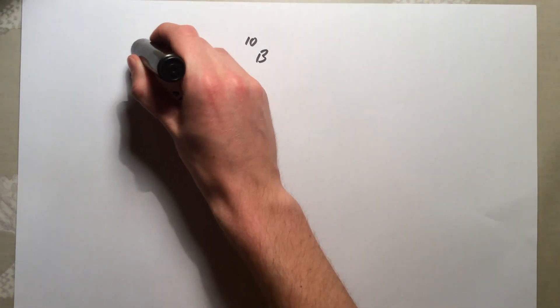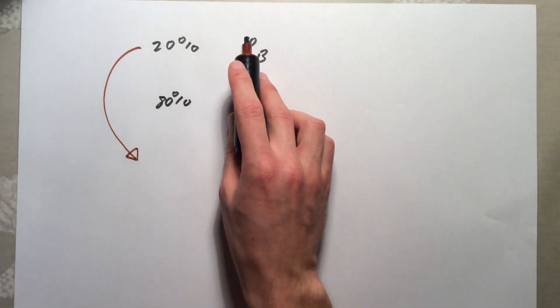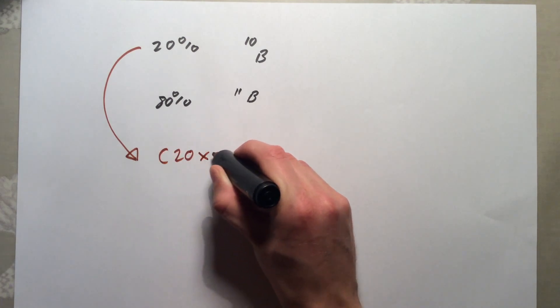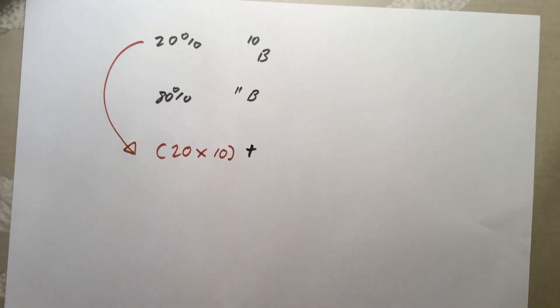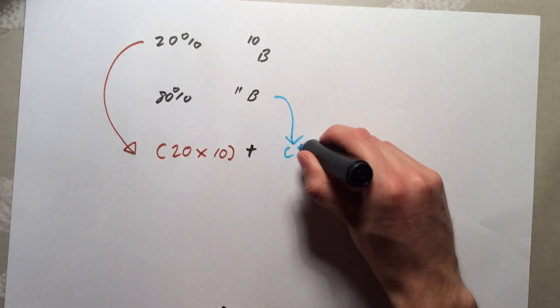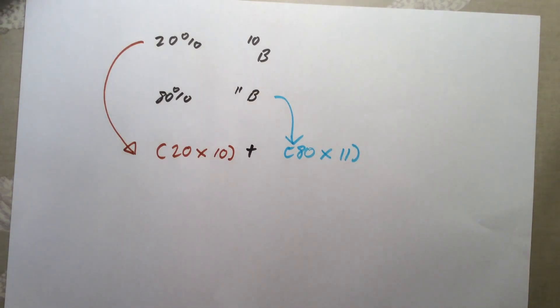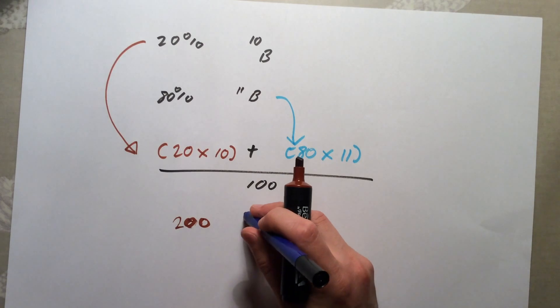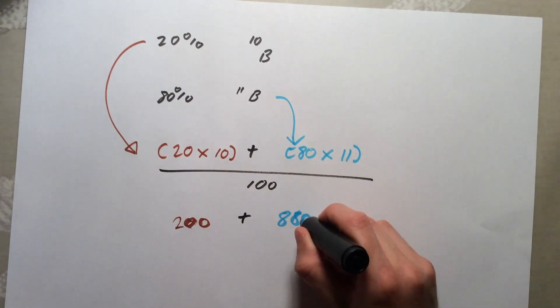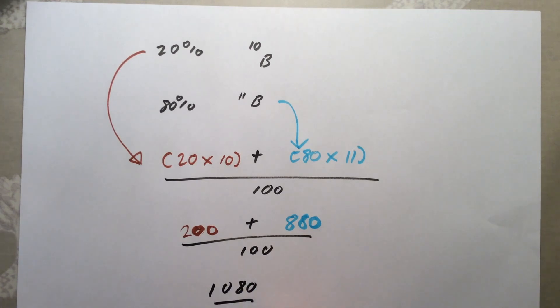Just like before, imagine you are working out the total mass of 100 atoms of boron. These 20 atoms with a mass of 10, we work out the total mass of them by doing 20 times 10. We then need to add the total mass of these 80% with a mass of 11, so plus 80 times 11. That will give us the total mass of 100 atoms. We then need to divide that by 100, and that should give us the relative atomic mass of boron. So 20 times 10 is 200, 80 times 11 is 880. So that is going to be 1080 divided by 100, which gives us a final answer of 10.8.